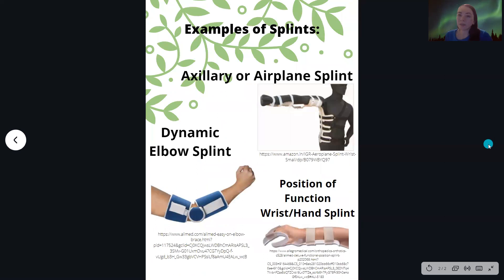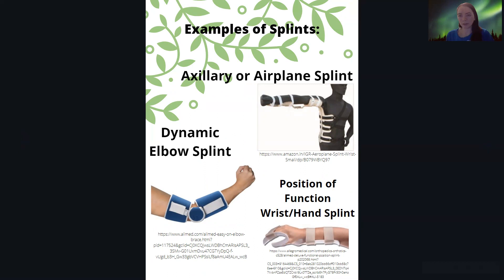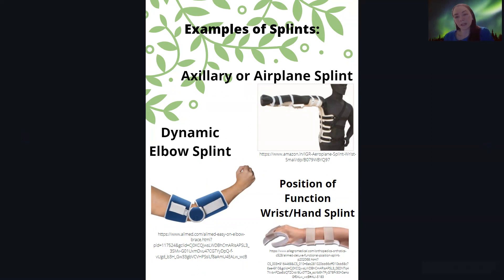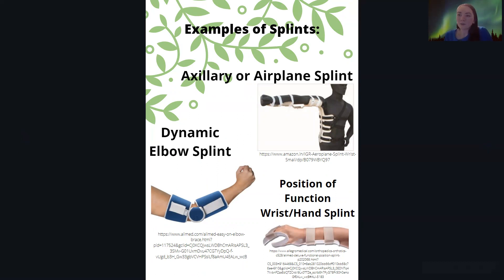I provided some pictures of a few of these splints. The airplane or axillary splint — this is how it kind of wings out. If the client is not abducting their arm, that would cause a contracture and they would get a wing effect and not be able to abduct their arm once the burn is healed. There's a dynamic elbow splint, which is helpful with resistance if they got a burn on their exterior arm. And then there's a position of function wrist hand splint, which is the sandwich-looking one. I hope you enjoyed this little tidbit on orthoses to use for burns.